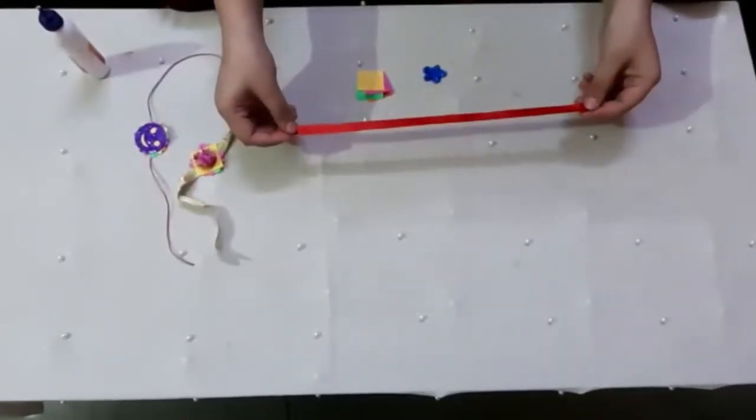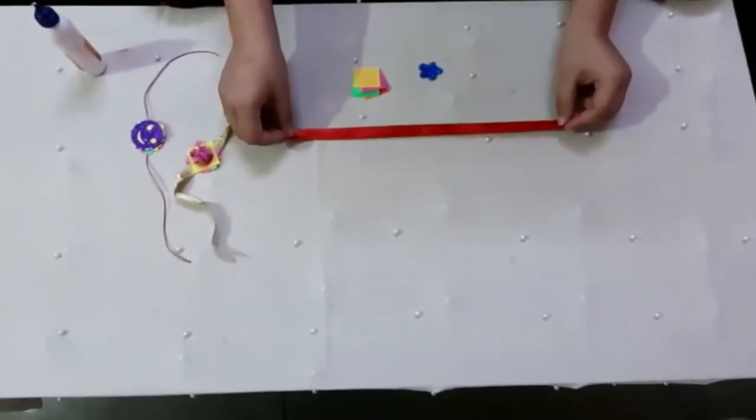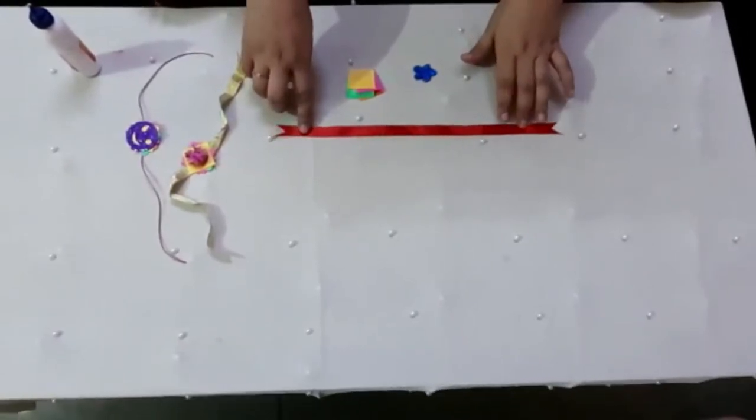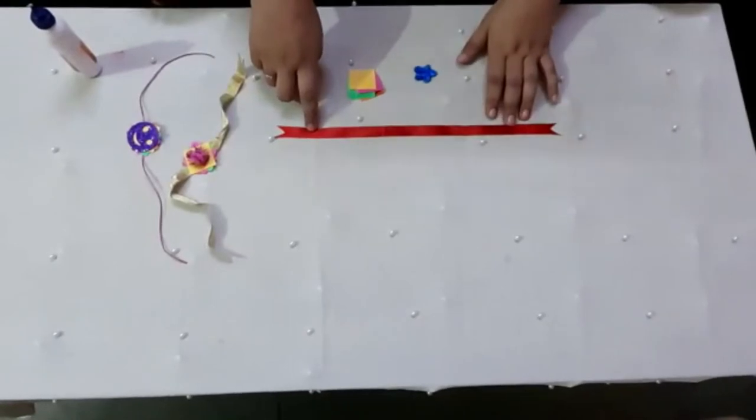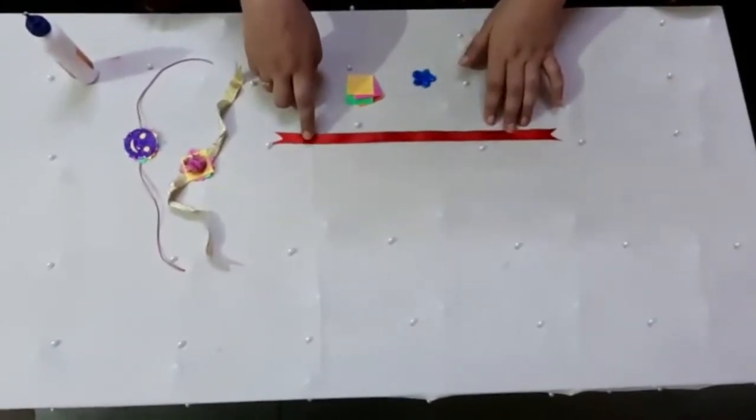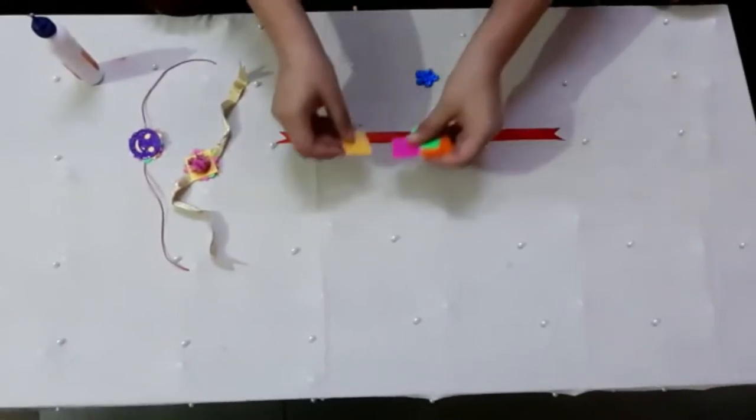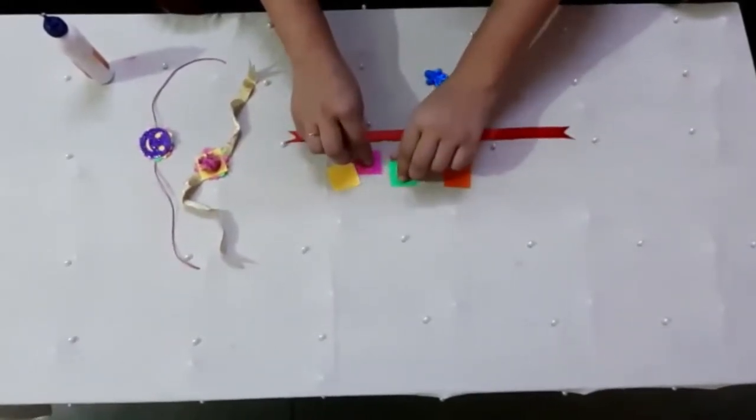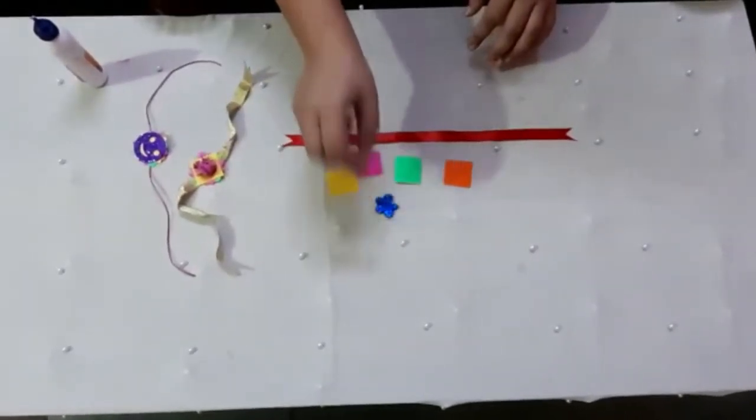Hello kids! So now we are going to make Rakhi for Raksha Bandhan. Here I have a cut out of ribbon. It is the size of the wrist, and then I have this square cut out of any color you can have and a cut out of a flower.